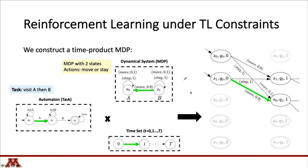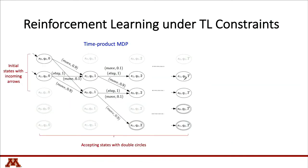Taking the Cartesian product of these three graphs yields a time product MDP, where each state contains an MDP state, an automaton state, and the remaining time. Transitions in the product MDP require corresponding transitions in each component graph simultaneously. If all transition probabilities are known, this reduces to a standard MDP problem of finding a policy that reaches accepting states.